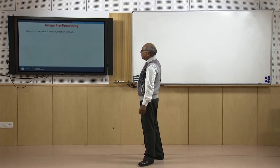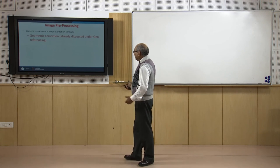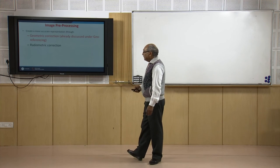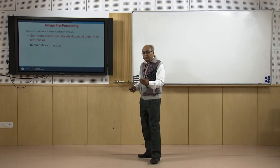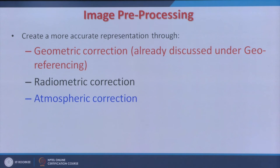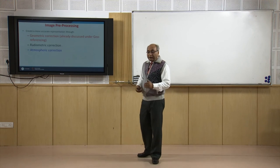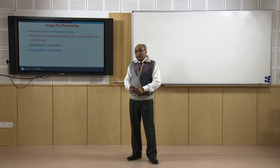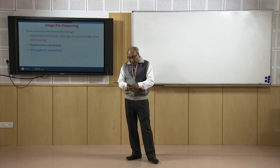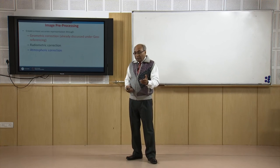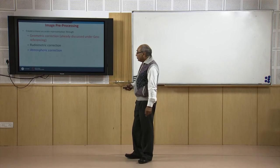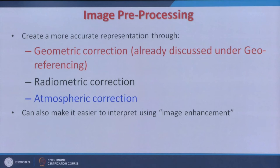In image preprocessing steps, geometric corrections have already been discussed under georeferencing. Radiometric corrections are generally done by satellite operators, but if not, utility software programs can be used — though this requires detailed sensor data. Atmospheric corrections are also performed using models, but these require significant input about ground conditions at the time of acquisition, which is very difficult to obtain.